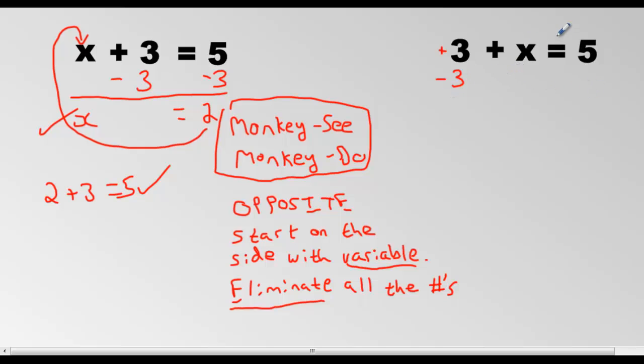And monkey see, monkey do. He does it on the other side. Here's the equal sign. Imagine an invisible barrier there. You do it on the other side of the equals. You put minus 3. And doing that gets you 2. You bring down the equals. 3's are gone. He's just 0.